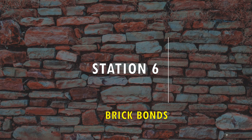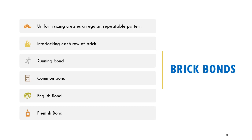Station 6 and the final station is where I'll be describing brick bonds. For any particular masonry structure, if you look at it from the outside, you notice there's a uniform sizing that creates a regular pattern that repeats itself — that's the brick bond. It's important to achieve that pattern because through interlocking each row of brick, you achieve the full capacity required to withstand loads and ensure the structure doesn't collapse. There are four main types used in Australia: the running bond, the common bond, the English bond, and the Flemish bond.